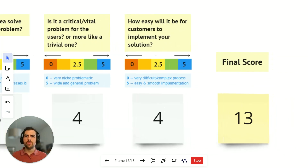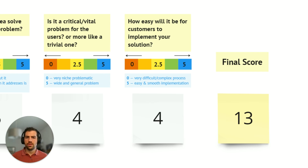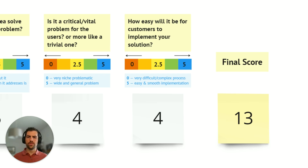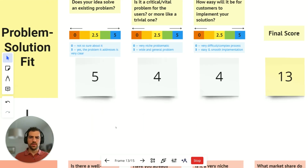'How easy will it be for your customers to implement your solution?' — zero is very difficult and five is easy and smooth. We've given it a four because it is rather easy; in fact, this answers a pain point around ease of use and the long learning curves of these kinds of platforms — so although it requires some knowledge, it should be relatively easy.